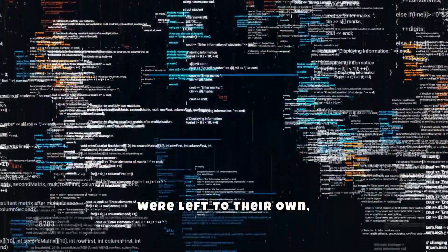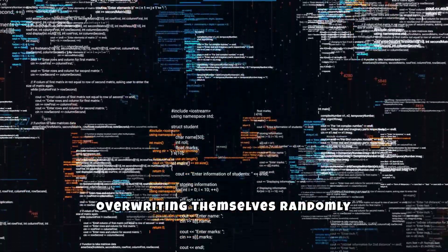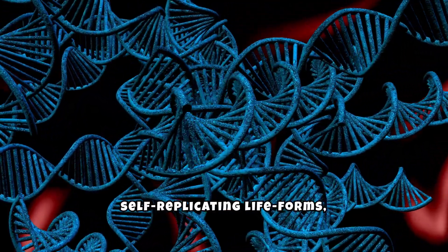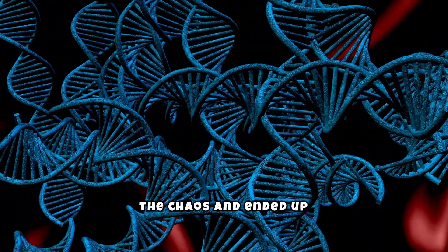The mixed code chunks were left to their own, executing and overwriting themselves randomly over time. And so, like a miracle, the self-replicating life forms emerged naturally from the chaos and ended up behaving just like life on Earth.